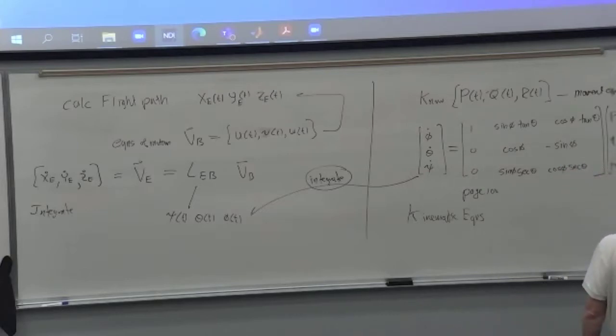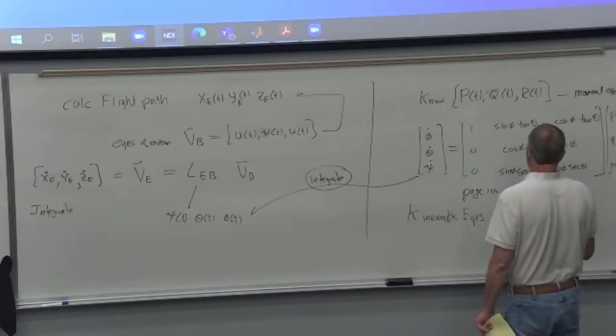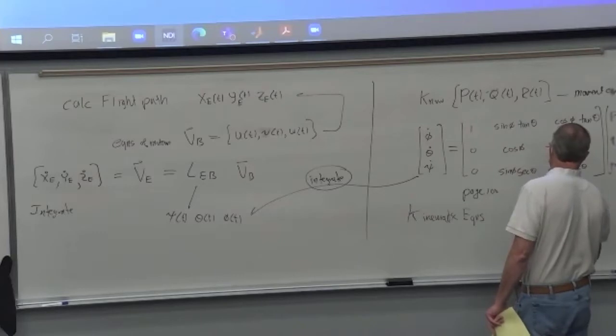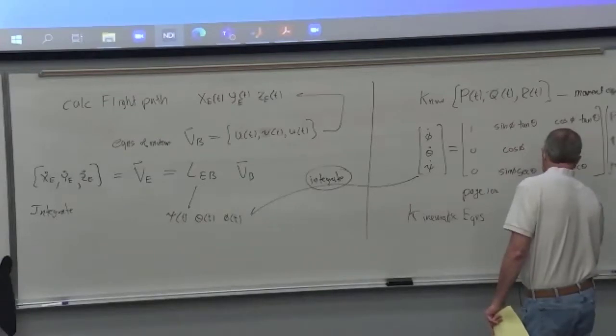Last thing. You can also see why there's problems with the gimbal lock when theta is 90 degrees when you look at this equation, because tangent of theta shows up in there, and that's sine over cosine.